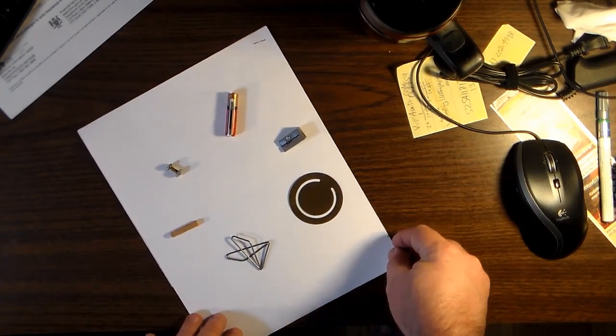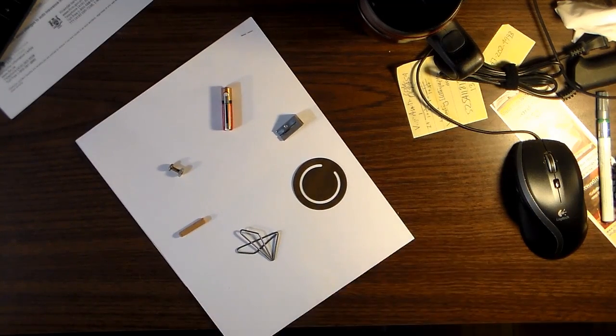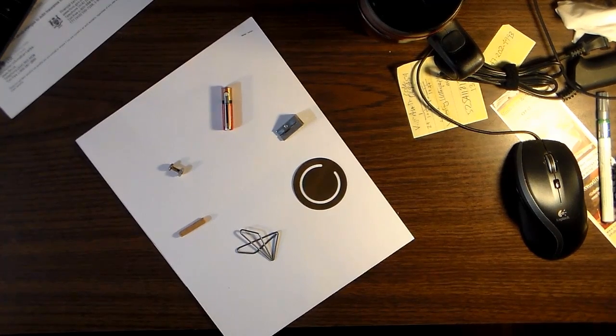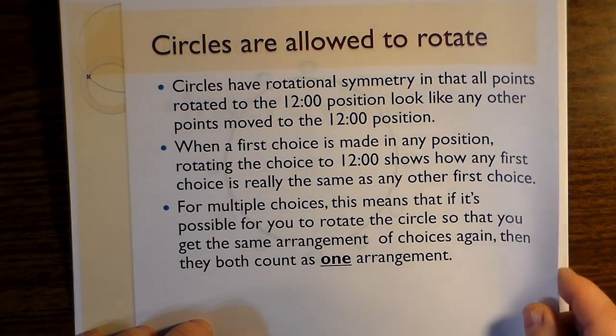For multiple choices, this means that if it's possible for you to rotate the circle so that you get the same arrangement of choices again, then they both count as one arrangement.